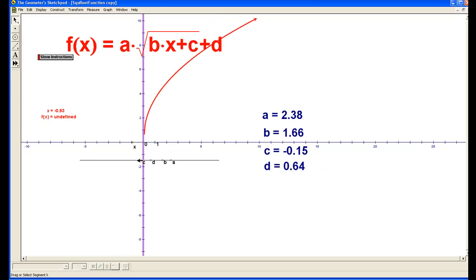The value of c shifts the function left or right. And the value of b also seems to determine whether the graph will point to the right or point toward the left.